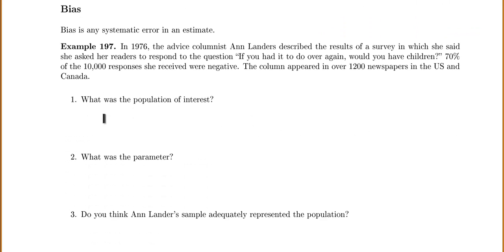Now we'll talk about some pitfalls of choosing samples. One of the first is bias. Bias is any systematic error in an estimate — something that affects you the same way over and over again. For example, in 1976, advice columnist Ann Landers asked her readers: if you had to do it over again, would you have children? And 70% of the 10,000 responses she received were negative. This column appeared in over 1,200 newspapers in the U.S. and Canada. You might think that 10,000 responses makes this accurate, but that might not be true.